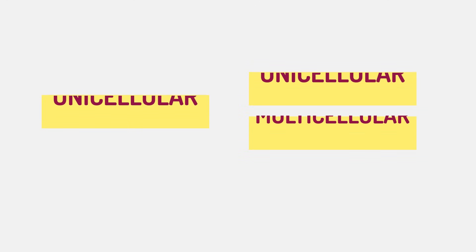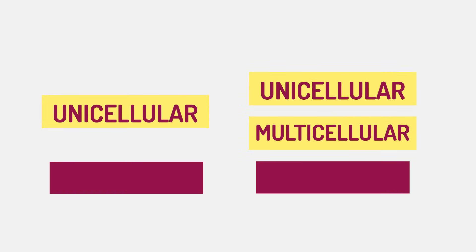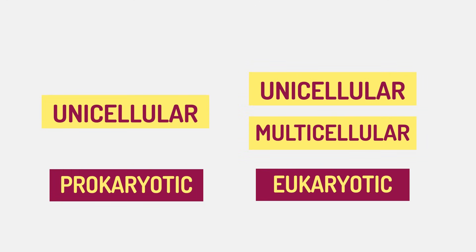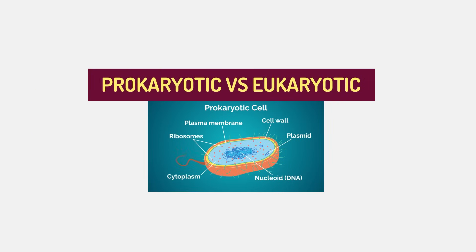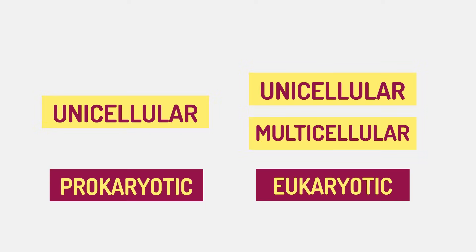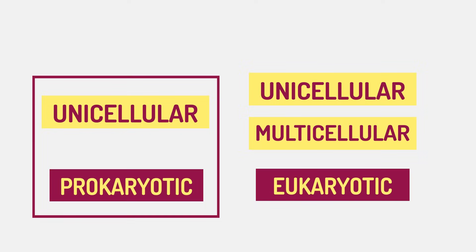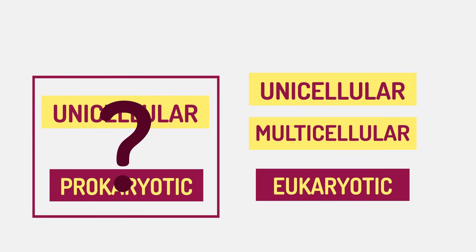All prokaryotes are unicellular. Eukaryotes can be uni- or multicellular organisms. We'll look at the difference between prokaryotes and eukaryotes in this video, and we'll discover why the statement that all prokaryotes are unicellular is contended by some scientists.